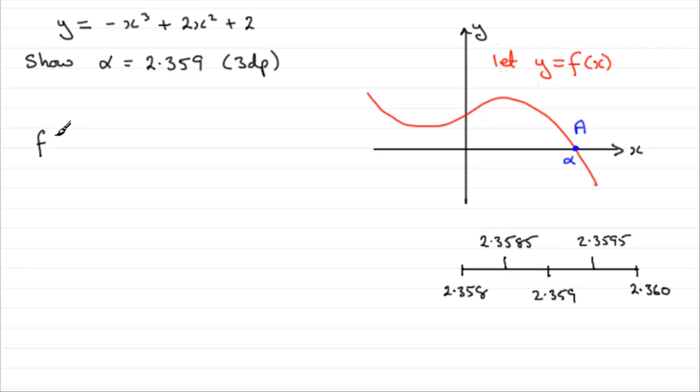If we just work out f of the lower bound, 2.3585, if we substitute it into here, we're going to have minus 2.3585 cubed plus 2 times the 2.3585, and that's squared and plus 2. And if you work that out on your calculator, what you get is 0.005835 and so on.